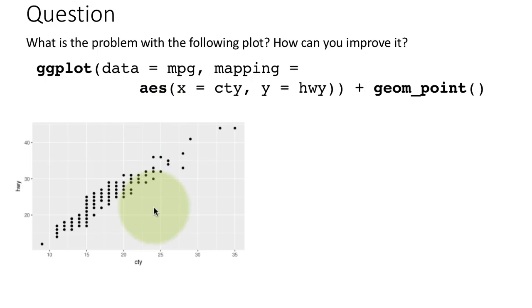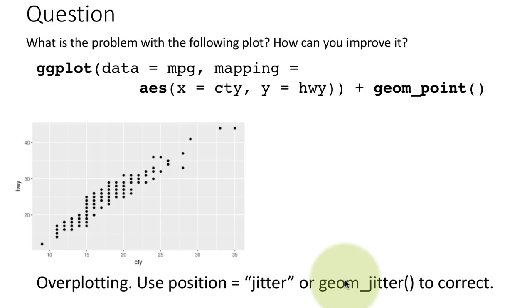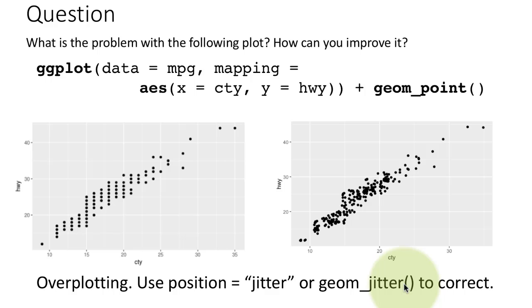So now let's take a look at this data set here. What is the problem with the following plot? How can you improve it? So here we are plotting highway mileage versus city mileage. And it is, again, because of the way in which the data has been rounded off to the nearest quarter, I think there is a lot of overplotting. And you can see that this is clearly not 200 plus points. So clearly we know what the solution is. Solution is position equals jitter or geom jitter.